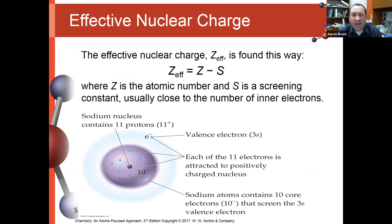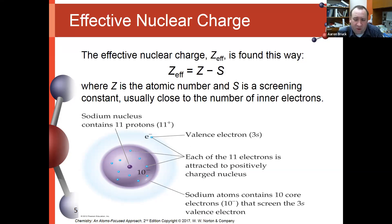We can generally estimate effective nuclear charge, which is given to us by Z-eff. If you remember from our AZX notation, Z is the atomic number of the element. Z-eff is the effective charge of that nucleus, found by taking the atomic number Z and subtracting from it S, a screening constant — sometimes called a shielding constant. The screening constant is usually pretty close to the number of inner electrons, specifically the core electrons designated by the noble gas configuration plus any d orbitals outside of that configuration.